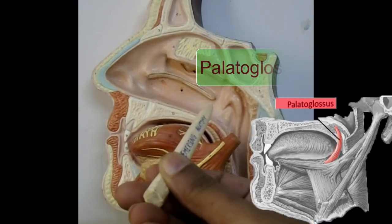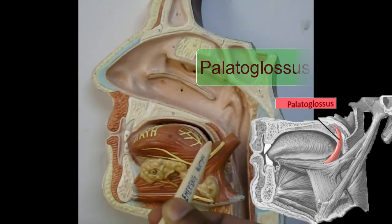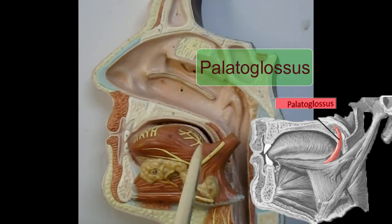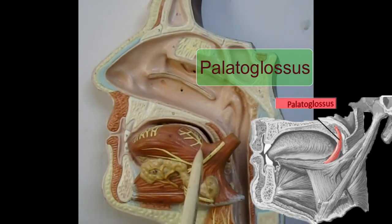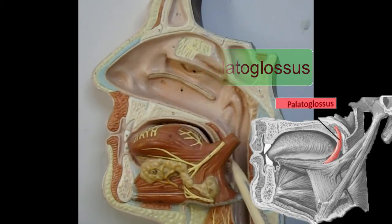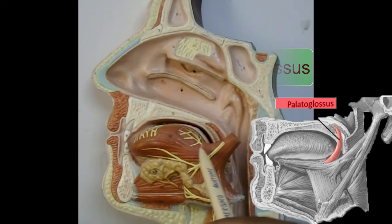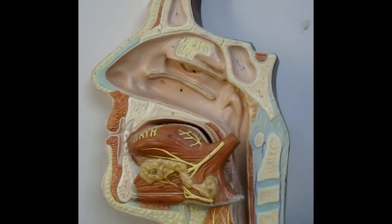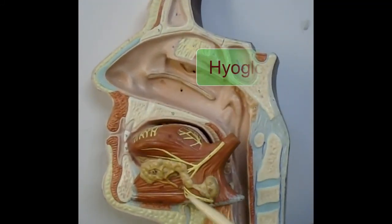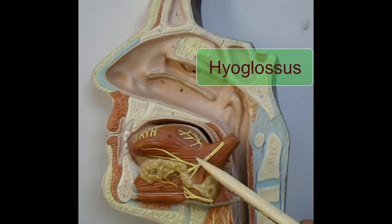Another muscle is the palatoglossus muscle. One muscle comes from the soft palate region and inserts on either side of the tongue. This palatoglossus muscle arises from the aponeurosis of the palate and inserts on both sides of the tongue. When the palatoglossus muscle contracts, it pulls the root of the tongue upward and closes the door between the oral cavity and the oropharynx. All the extrinsic muscles of the tongue except the palatoglossus are supplied by the hypoglossal nerve. Another muscle is the hyoglossus, which arises from the hyoid bone and inserts on the posterior aspect of both sides of the tongue.